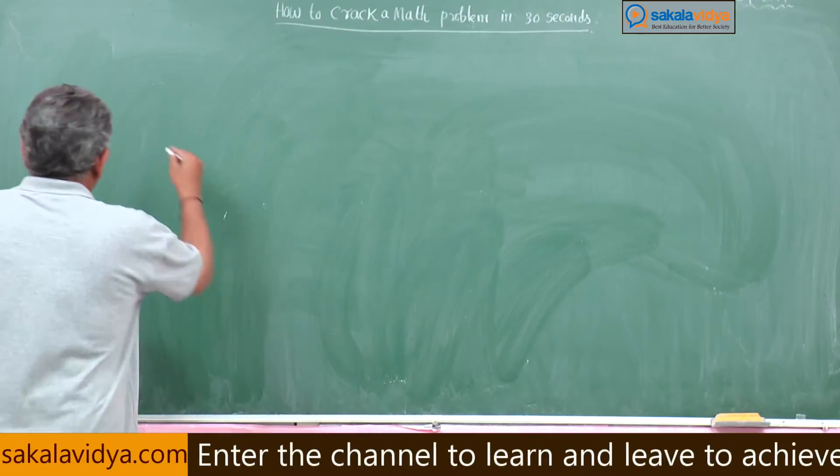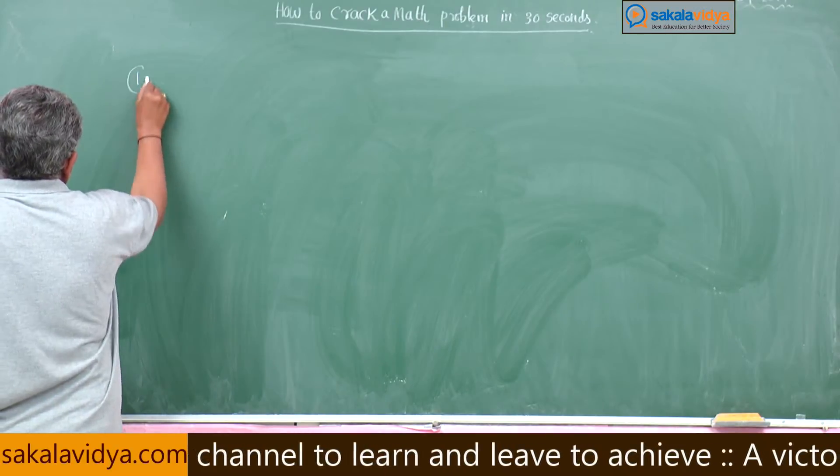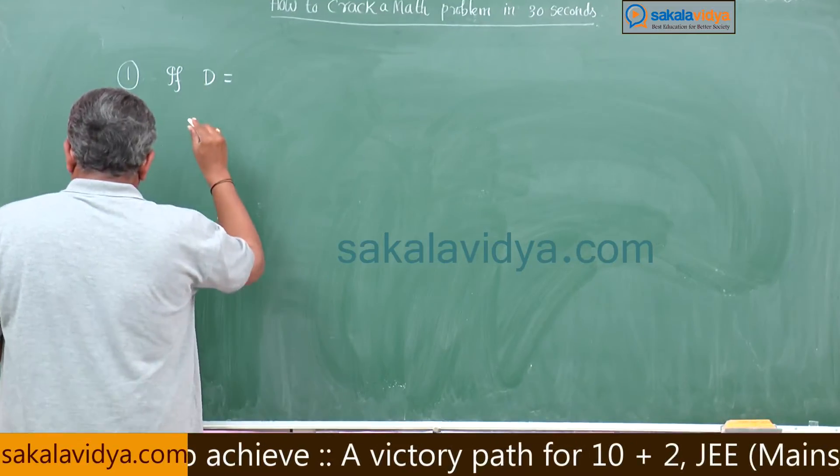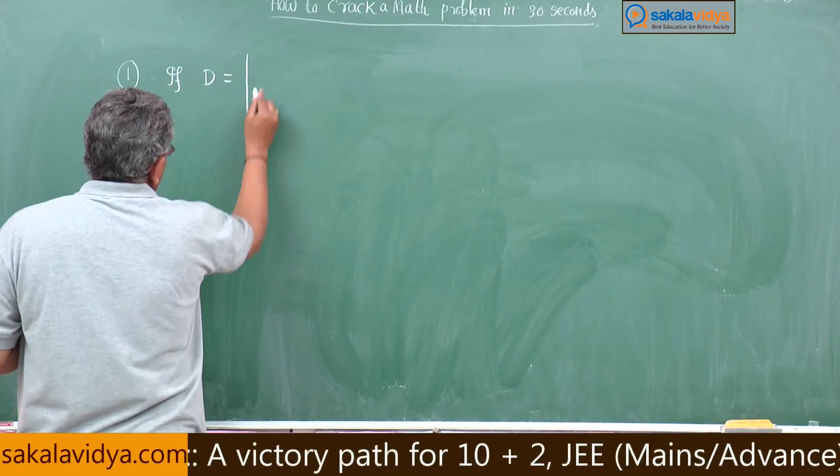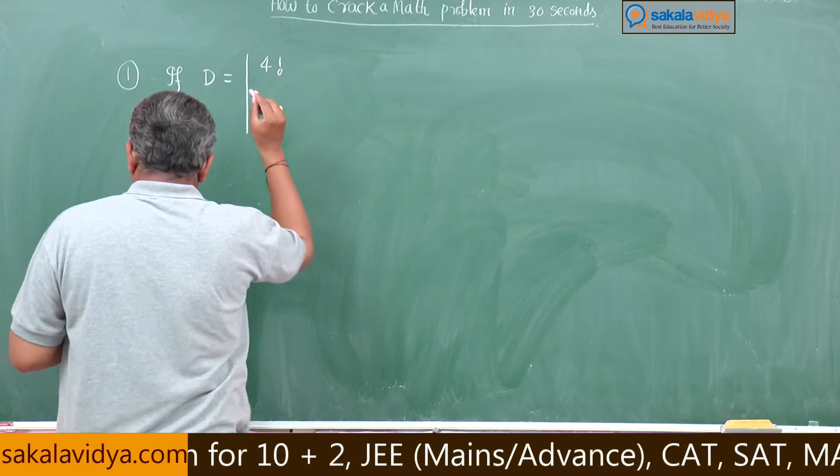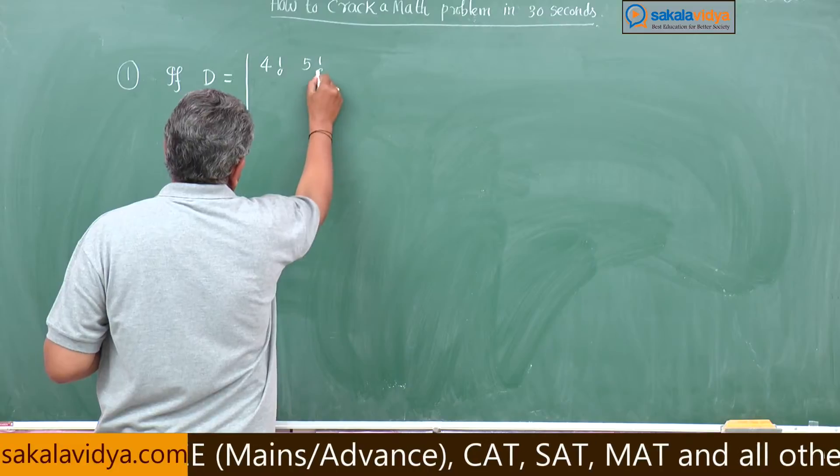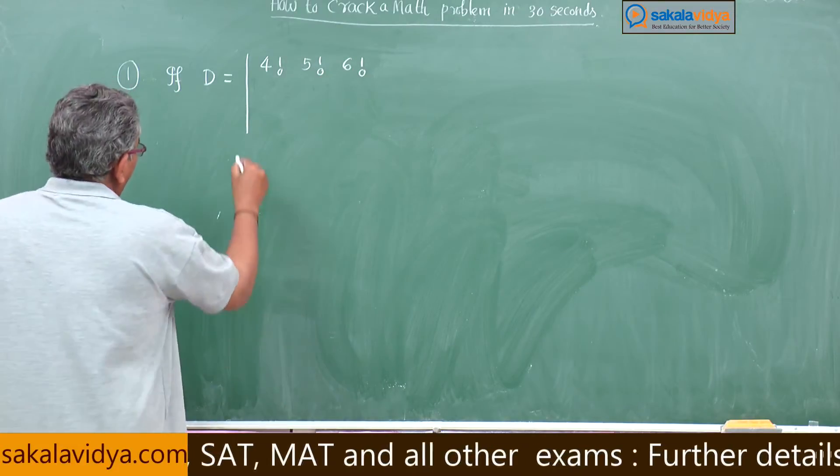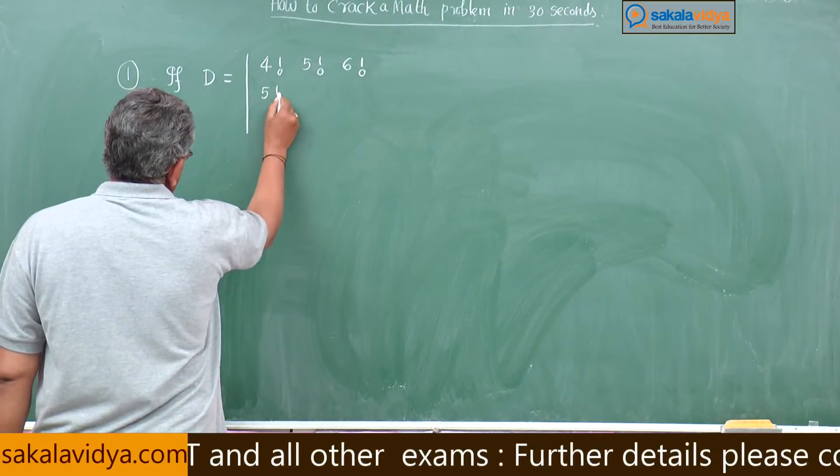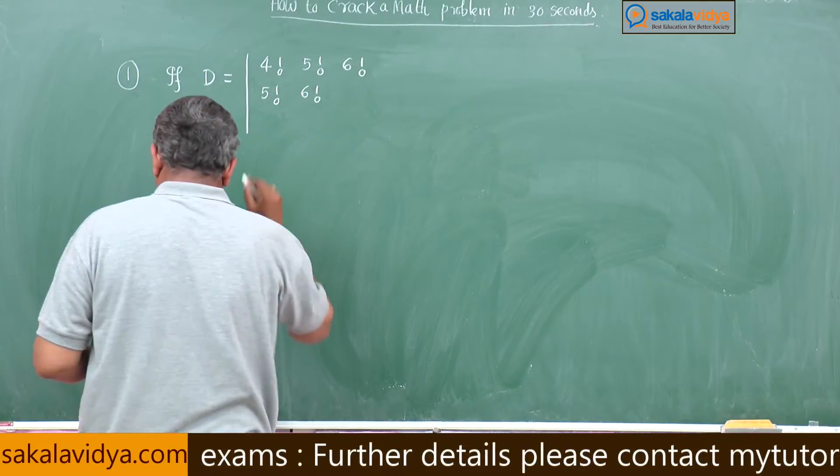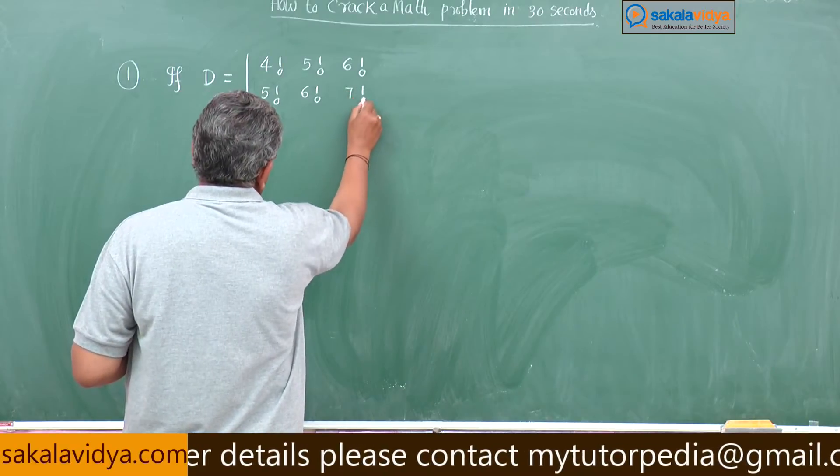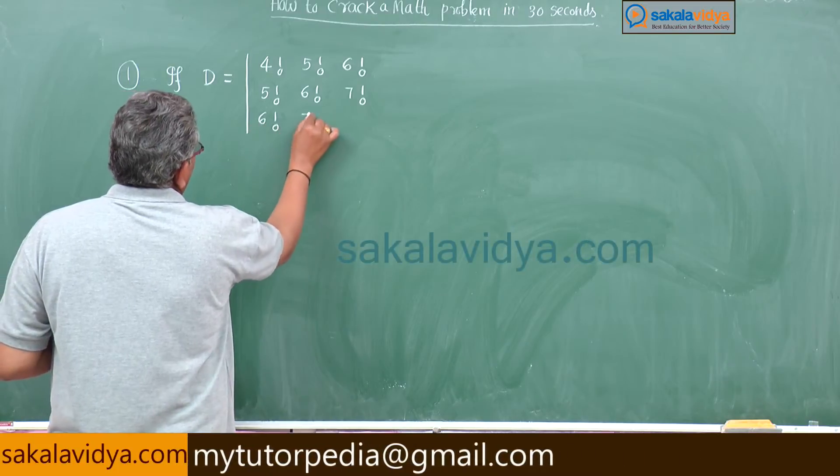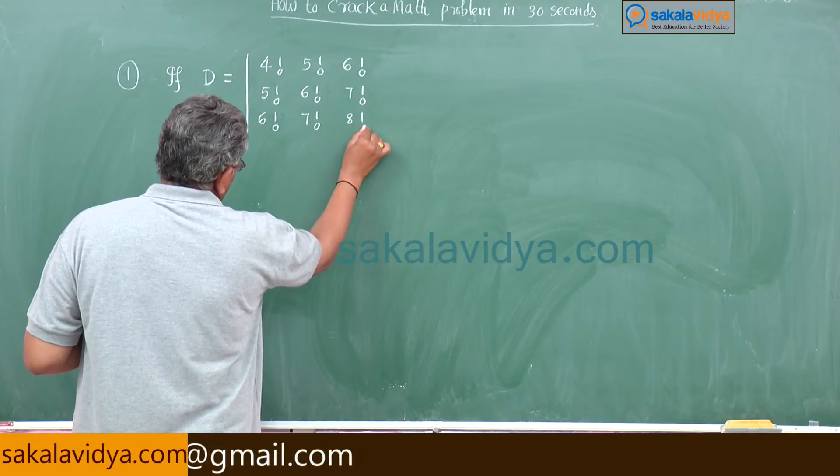First problem, if D is equal to determinant of 4 factorial, 5 factorial, 6 factorial; 5 factorial, 6 factorial, 7 factorial; 6 factorial, 7 factorial, 8 factorial.